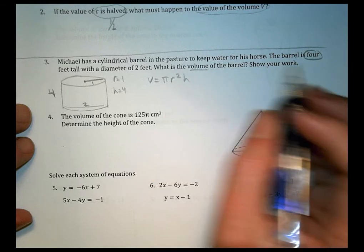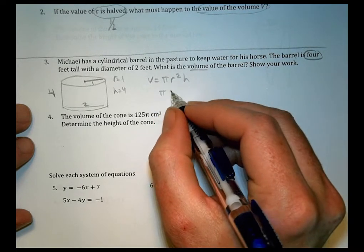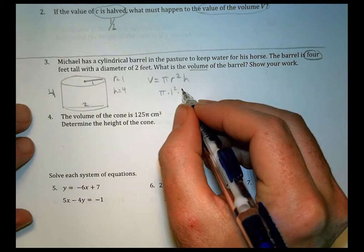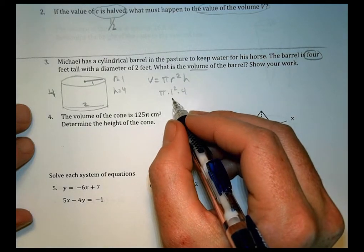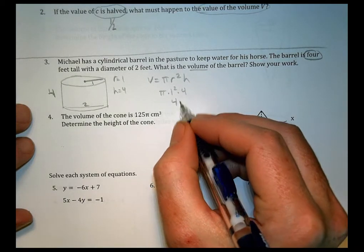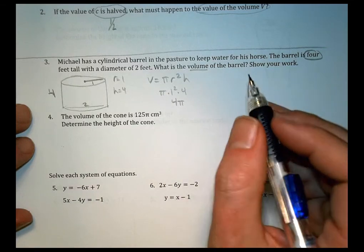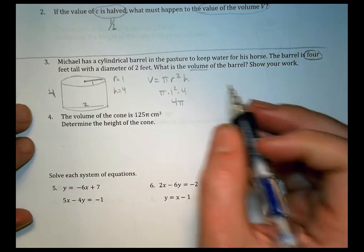The height equals four. Our formula is volume equals pi r squared h. So we're going to plug those things in. We have pi times one squared times four. This becomes simply one times four, which is four pi.